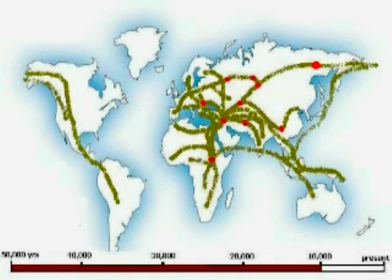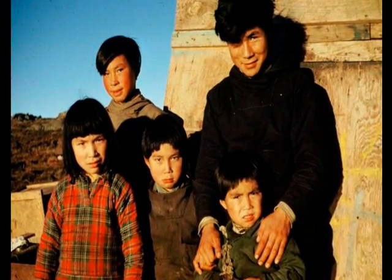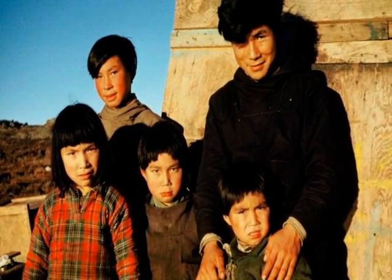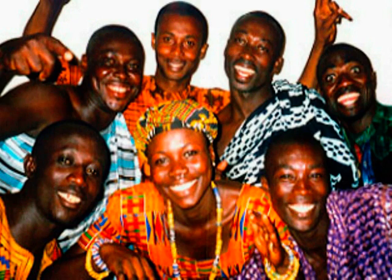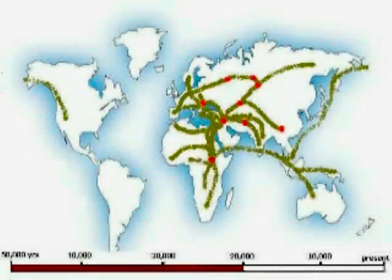Wherever they went, humans adapted to the climate and new diets. People moving into northern climates lost the melanin in their skins — melanin inhibits the production of vitamin D by sunlight, which is no problem in sunny Africa but a drawback in northern latitudes. As long as they were moving and opening up new territory, there was plenty of space for excess populations to expand. But around 20,000 years ago, the human diaspora had filled nearly every continent, and settled populations began to grow.